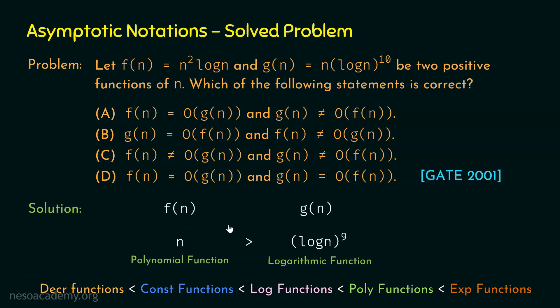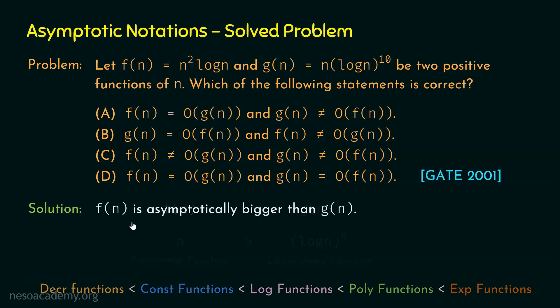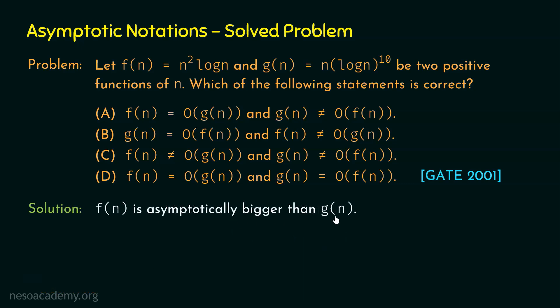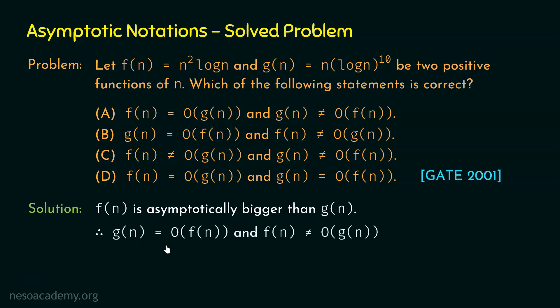According to the definition of big O notation, f(n) is asymptotically bigger than g(n), but g(n) is not asymptotically bigger than f(n). Therefore, g(n) = O(f(n)) and f(n) ≠ O(g(n)). Hence, option B is the correct option.